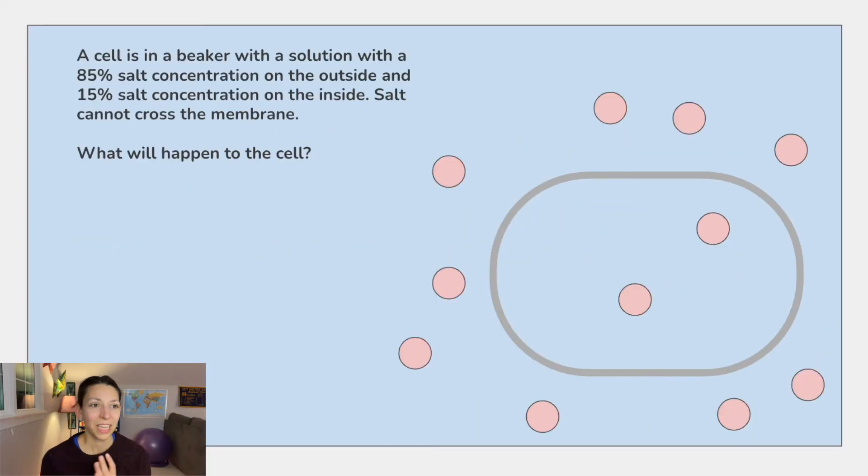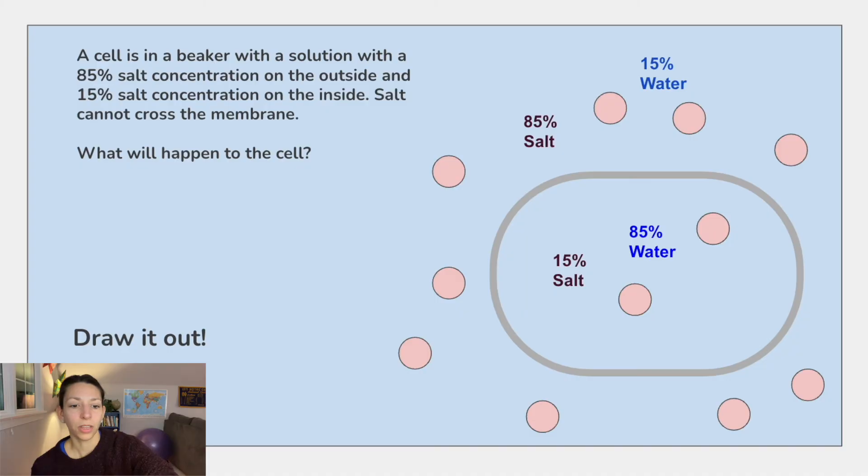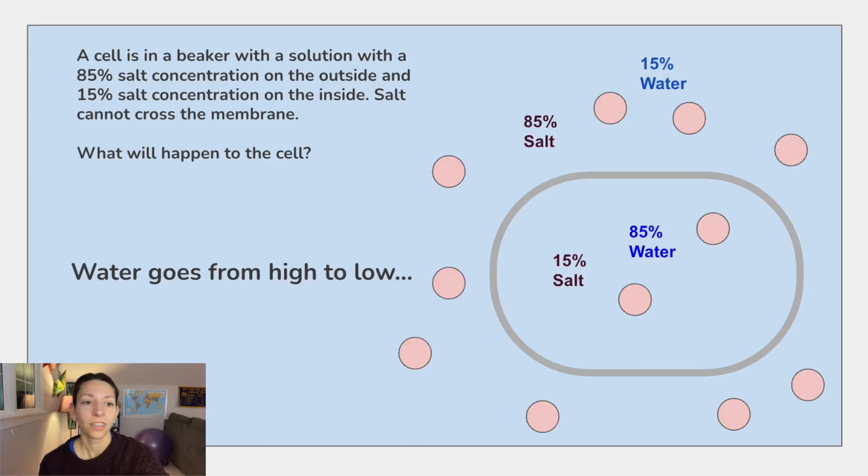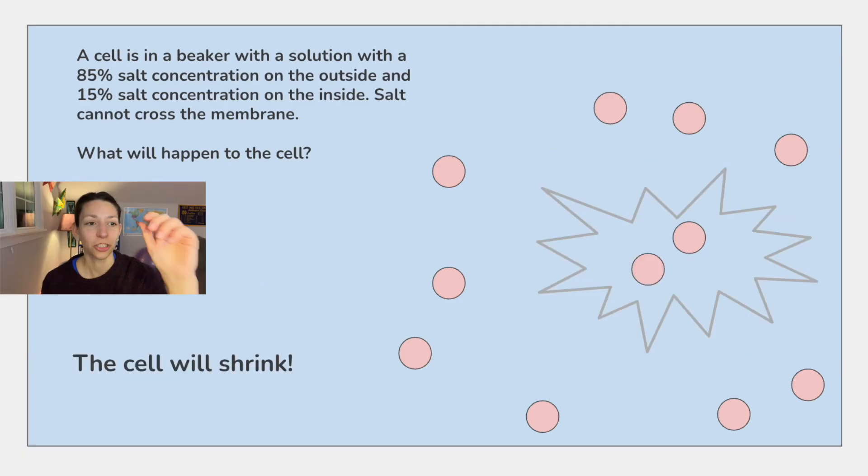Okay, now let's put some numbers to it. A cell is in a beaker with a solution with an 85% salt concentration on the outside and a 15% salt concentration on the inside. Salt cannot cross the membrane. What will happen to the cell? Now think about in terms of numbers. So we have 85% salt on the outside, 15% salt on the inside. If you're doing this on your own with no diagram, you could even draw it out if you had a problem like this. And then on the outside, there's 15% water, 85% water on the inside. So where is the water concentration highest? It's on the inside of the cell. Water will move from high to low. So water will move outside of the cell. What could happen to the cell? It could shrink.